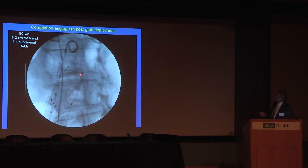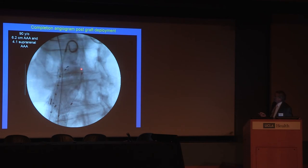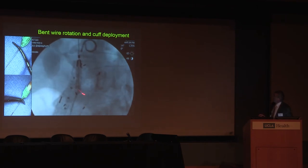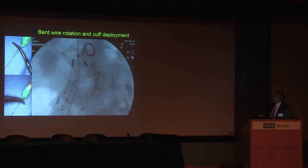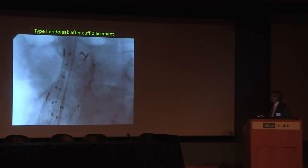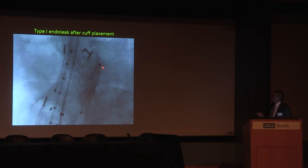Here's a case where on completion angiogram we see both a suprarenal and an infrarenal aneurysm in a 90-year-old patient. You can see the Type 1 endoleak and the device is a little away from the renal artery. We do have room to place a cuff on one side, but the other renal artery is relatively close. So we used what we call the bent wire technique — put a bend in the wire, rotate it, and the cuff is now oriented to purchase more aorta on one side. It's a nice technique when one renal is close to the top of the graft but the other isn't. However, this cuff did not fully resolve the problem — there's still a Type 1b and Type 1a endoleak.